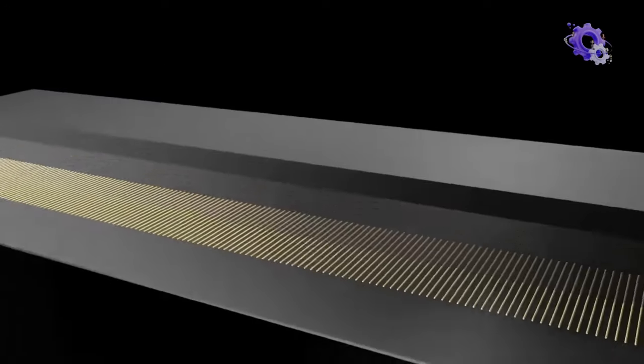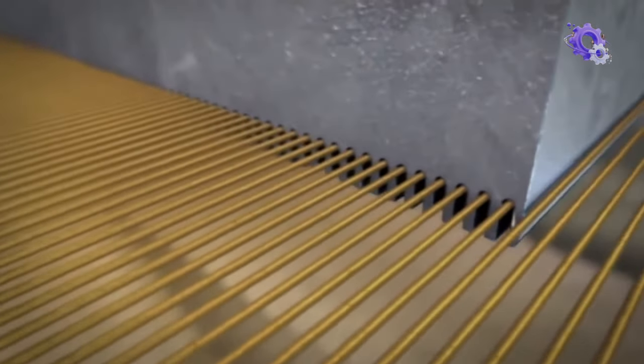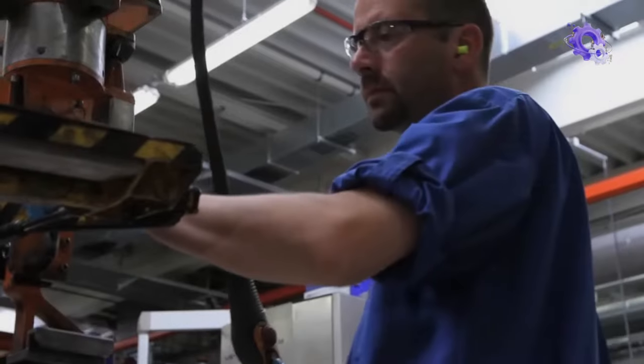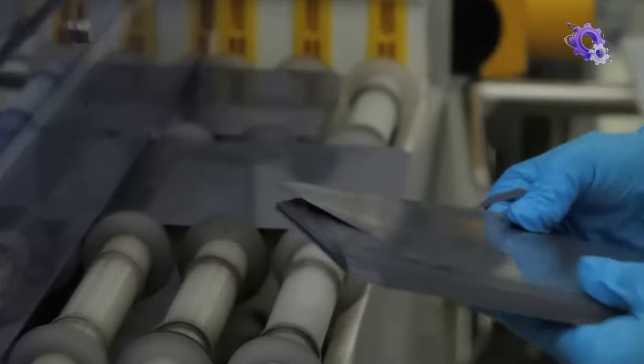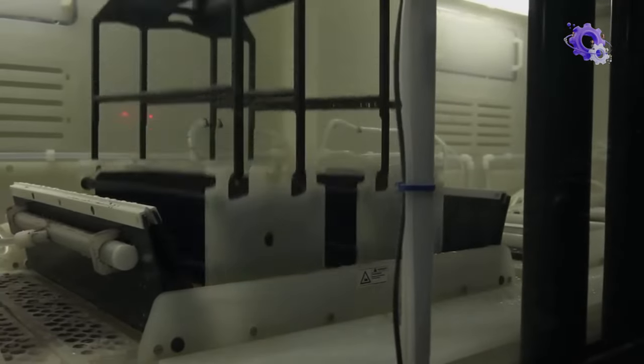The silicon ingots are sliced into thin wafers using a wire saw, a process that requires precision to minimize material loss. These wafers, typically less than 200 micrometers thick, undergo surface treatment to remove any remaining impurities and defects.